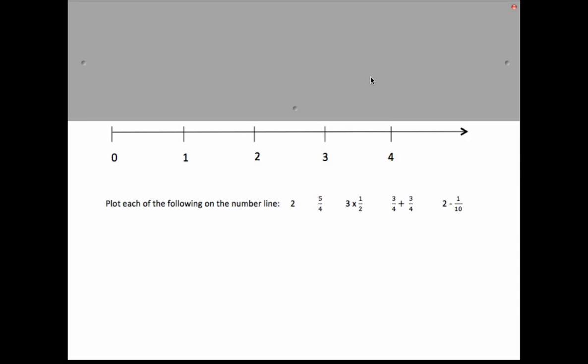Hello mathematicians. Today we're going to be asked to figure out the following problem. We're being asked to plot each of the following on the number line: 2, 5 fourths, 3 times 1 half, 3 fourths plus 3 fourths, and 2 minus 1 tenth.